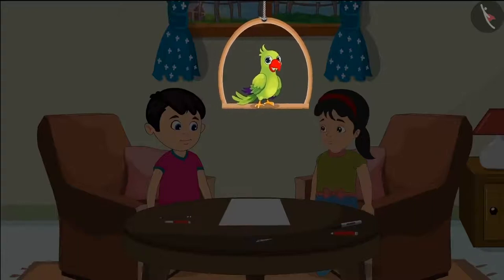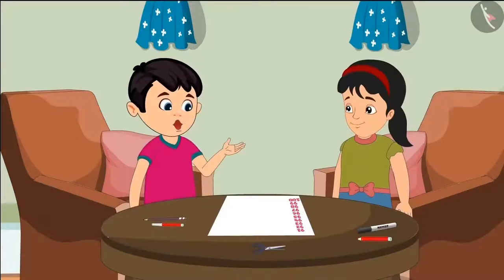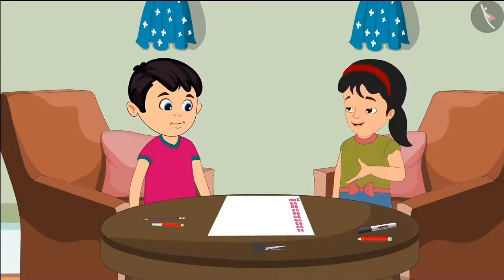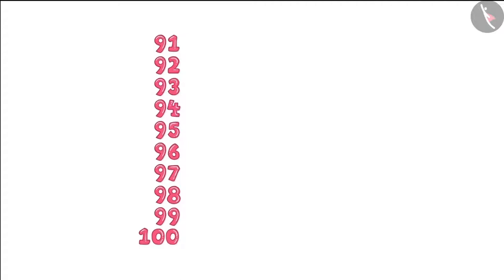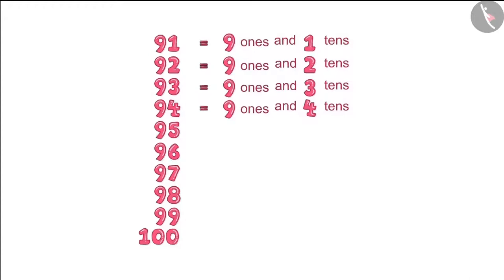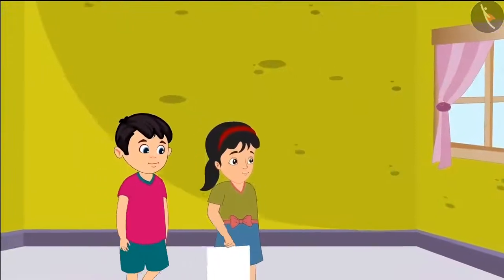Today, Shotu and Pinky's teacher has asked them to make a chart of numbers from 91 to 100. Pinky says, let's write the ones and tens of these numbers in the chart. Okay Shotu! Pinky and Shotu have written numbers from 91 to 100 and also written the ones and tens of some numbers.